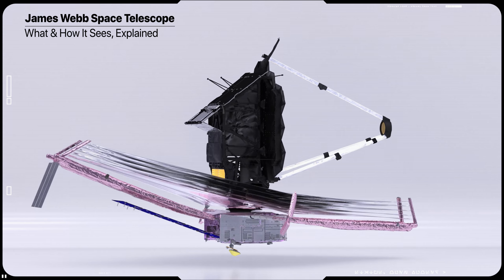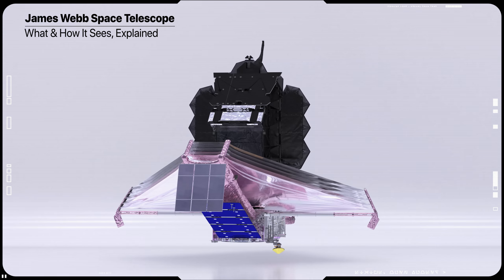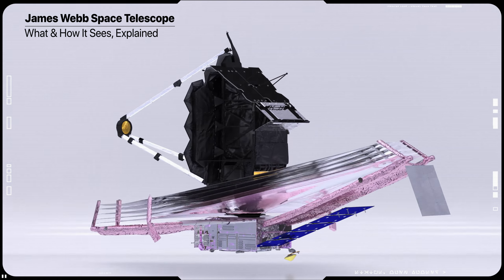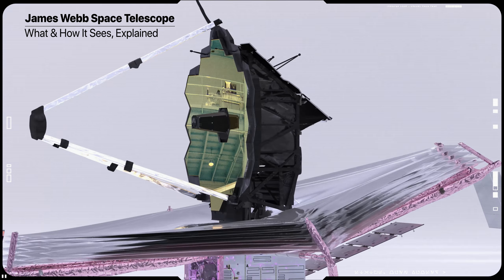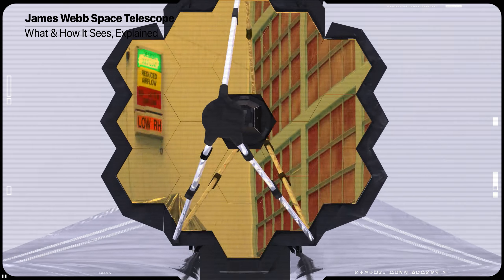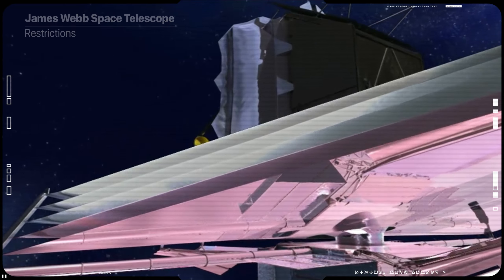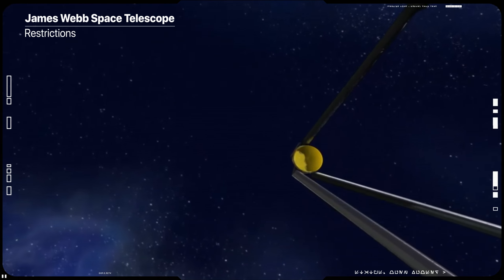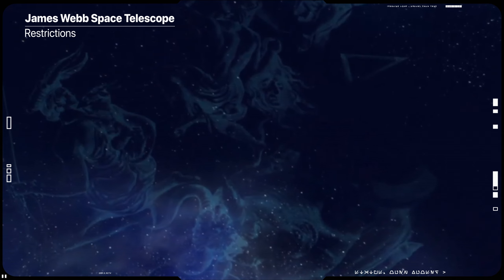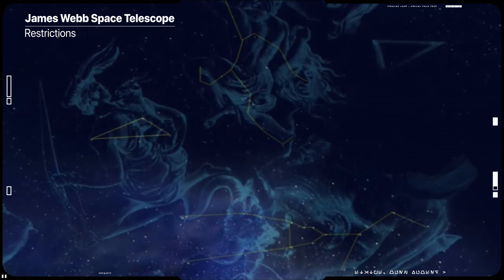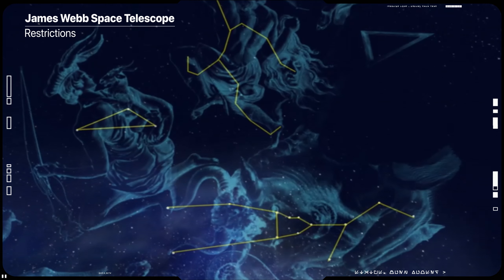James Webb Space Telescope. So sensitive it could theoretically detect the heat signature of a bumblebee at the distance of the moon. But James Webb has multiple restrictions and time-variable viewing constraints, imposed by a combination of observatory safety concerns and target position in ecliptic coordinates.